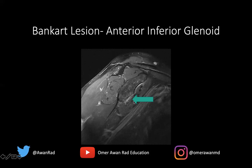Looking at the anterior inferior quadrant of the glenoid, there is a lot of edema and fluid there. Normally the glenoid should be a nice circle — this area should be convex, bulging outward. But now it's concave, bulging inward. Because we've lost the convex contour of the anterior inferior glenoid, we know there is a Bankart lesion. And since we've lost the convexity of the bone itself, this is an osseous Bankart lesion — the bone has been broken or contused along the anterior inferior glenoid.